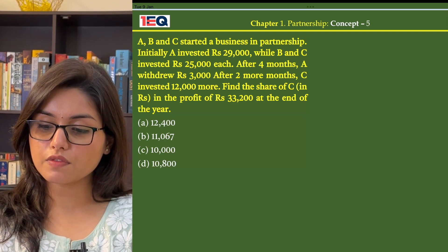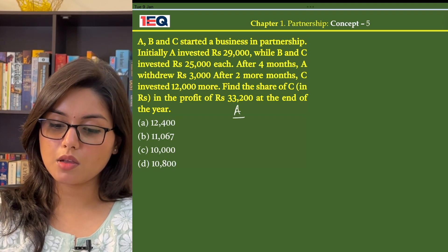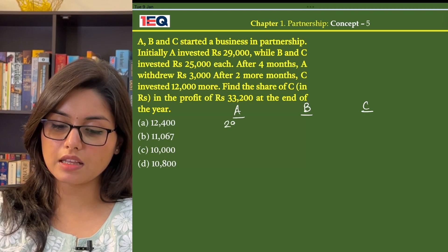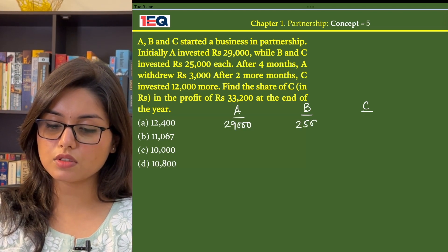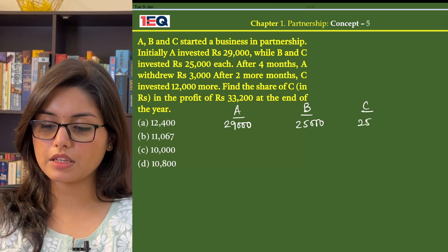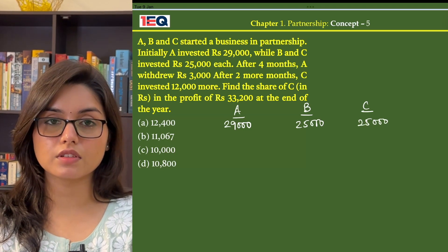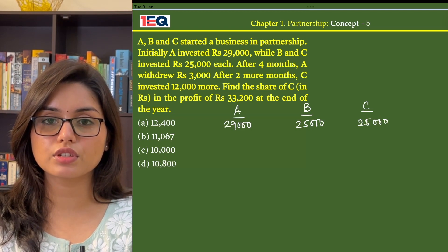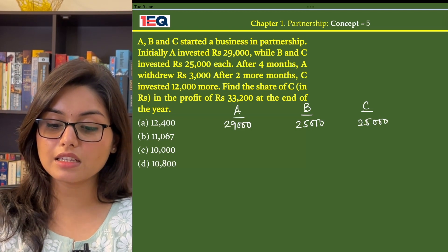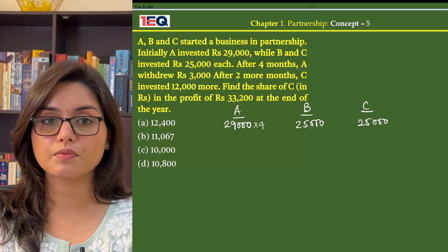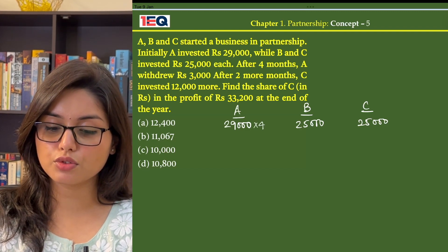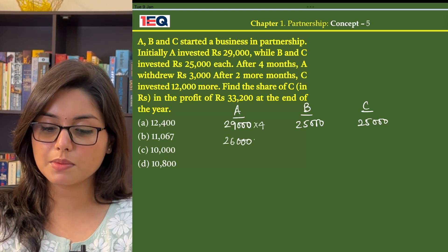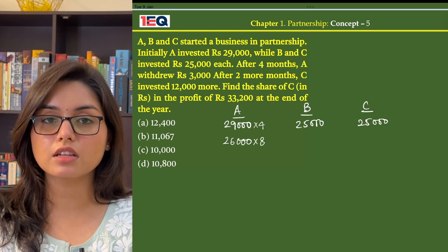In the given question, A, B & C invest Rs 29,000, Rs 25,000 and Rs 25,000 respectively. After 4 months, A withdrew Rs 3,000, meaning he had invested Rs 29,000 for only 4 months. After that, he is left with Rs 26,000, which will be his investment for the remaining 8 months.